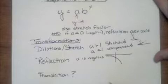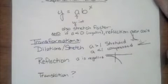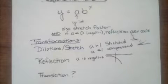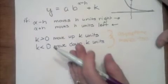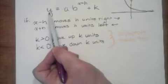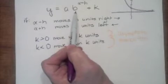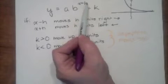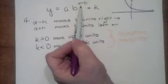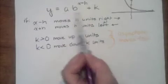So we've talked about dilations and reflections, but what about translations? Nothing we have so far can help us with translation, so we need to add something to be able to do a translation. We're going to add a few things to our basic function. Now we're looking at the full translation form: y equals a times b to the x minus h, and then we add a k to the whole thing.